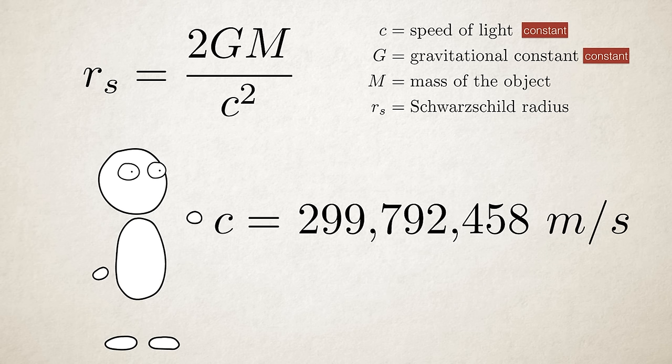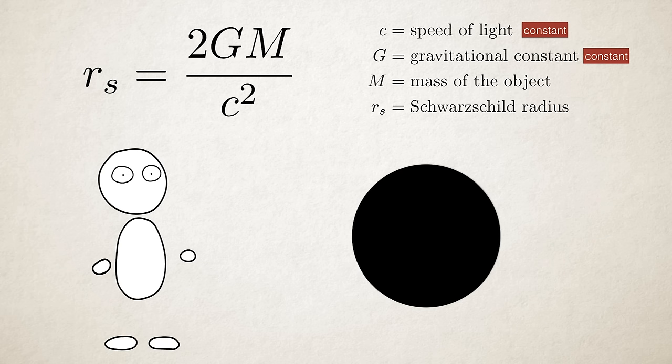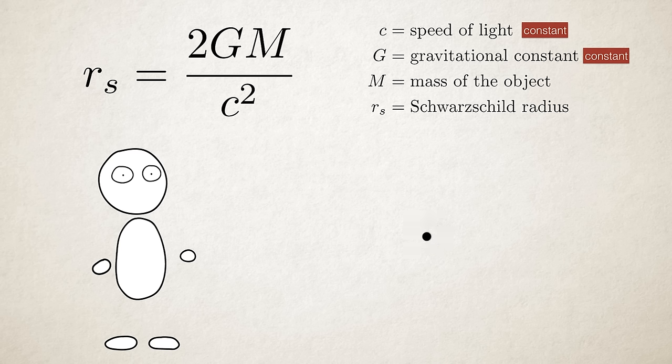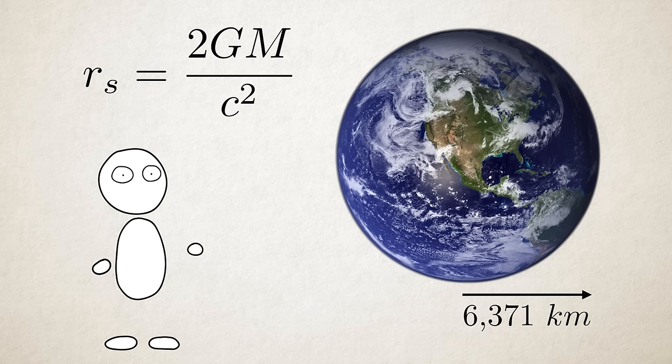Because the speed of light is such a gargantuan number, its square is ginormous. Which means unless you have an unbelievably big mass, the Schwarzschild radius is very tiny. Take the Earth, which is pretty massive. It has a radius of over 6000 kilometers. Its Schwarzschild radius is only 8 millimeters.